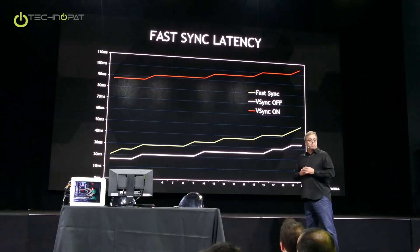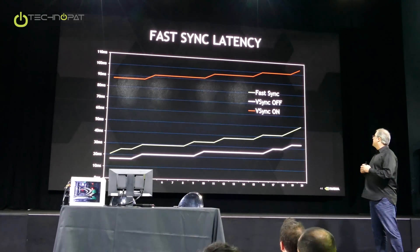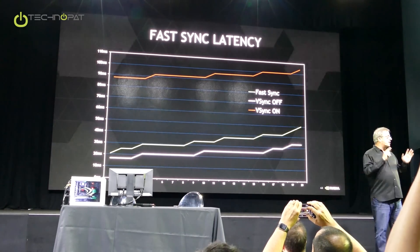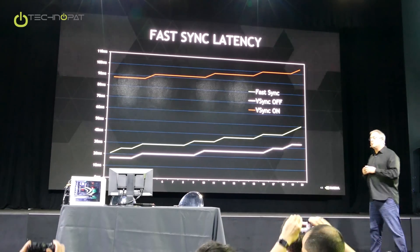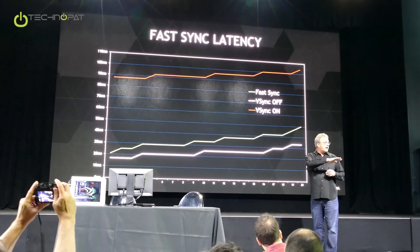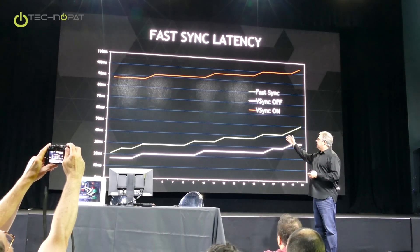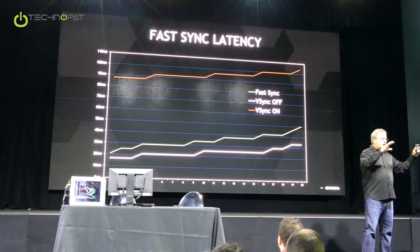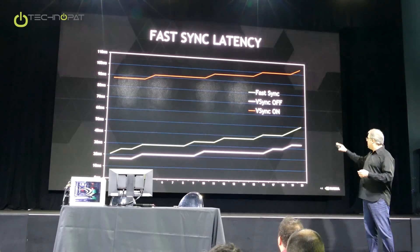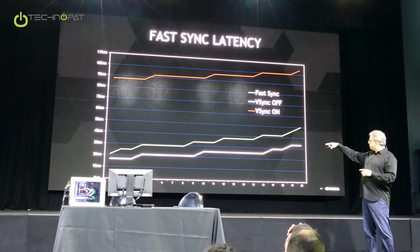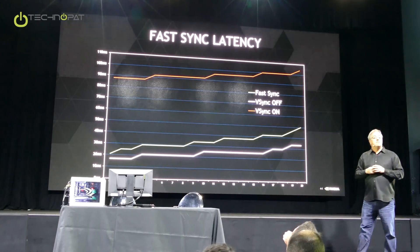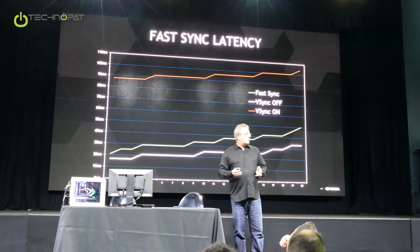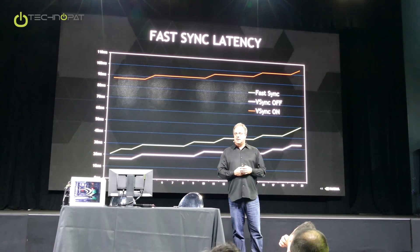The data is pretty compelling. Counter-Strike GO running on Pascal shows latency shockingly high — about 90 milliseconds — based on a bunch of samples done with a high-speed camera. If you're playing Counter-Strike GO, one of the most popular eSports games and a first-person shooter, latency is critical. You're basically going to lose every time if you turn vSync on. Gamers today are playing these games with jitter and tearing because they're running a couple hundred frames a second. When you turn Fast Sync on, you get about eight milliseconds or so more latency than vSync off — giving you the best of both worlds: no tearing, high visual fidelity, and very low latency.